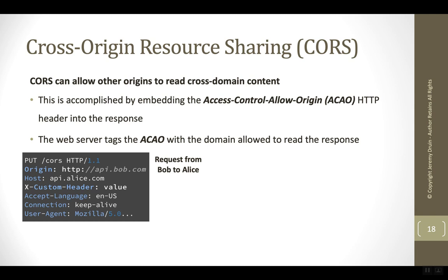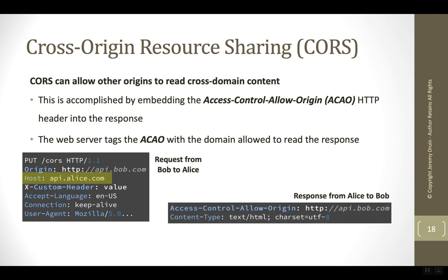Imagine that we have a request going from Bob to Alice. We can see that the request is heading over to the API on the alice.com domain. In order for Alice to allow Bob to read this response, Alice would have to put an Access-Control-Allow-Origin header, and it would have to have the exact value of the origin — in this case bob.com — including the scheme HTTP as part of the domain specified in the permission slip.